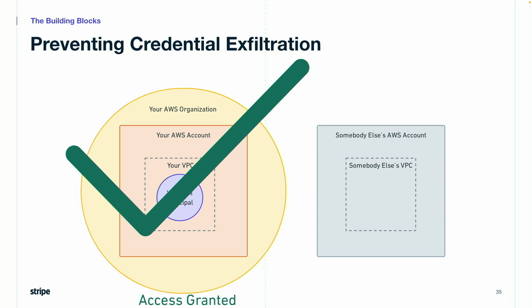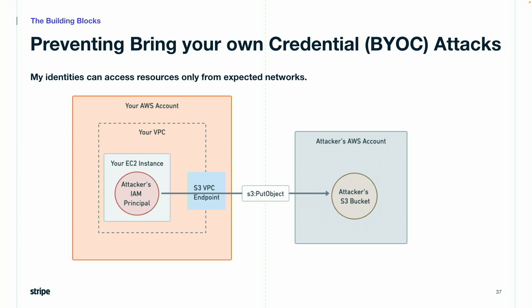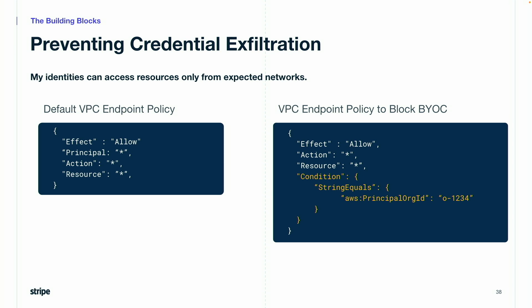We finished control number one — that was the most complicated one. Next: preventing bring-your-own-credential attacks. This is the opposite problem of credential exfiltration. Instead of an attacker pulling your credentials out of your network, they're using their own credentials within your network to exfiltrate data. In this picture, we don't own the principal or the resource, so we can't add policies there, and an SCP will not help us. But the request is being routed through a VPC endpoint, so we can create a VPC endpoint policy to block the action. The default policy has no restrictions at all — VPC endpoint policies are similar to permission boundaries in that they don't ever grant permissions. This policy of allow star-star-star just represents the upper bound for what requests can perform. The solution is to add a condition that requires the principal to belong to our organization; if it doesn't, the request is denied. This only affects requests routed through this specific endpoint, so you'll have to apply this to every endpoint.